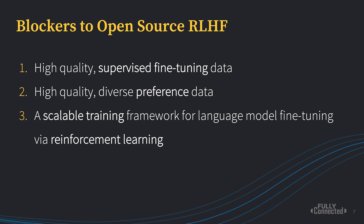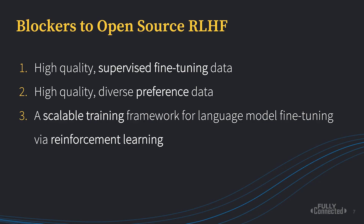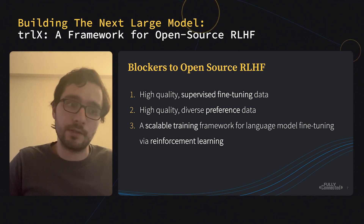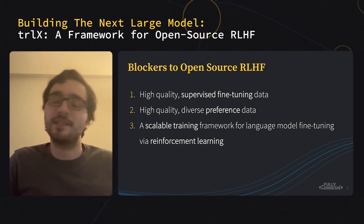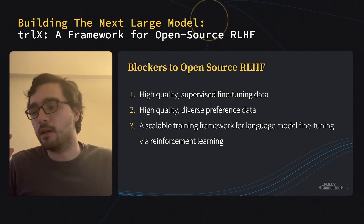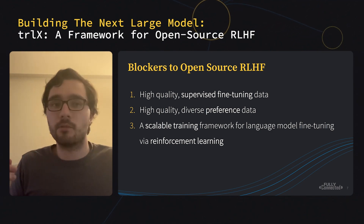Number two, once you have a supervised fine-tuned model, you still need access to high quality preference data — where you present various responses to users and have them rank or choose which responses are most preferable. This is also relatively expensive to collect and there are not that many examples out there in the wild. Number three, and perhaps most underrated, you need a scalable training framework for language model fine-tuning with real reinforcement learning. The dominant language model training paradigm has been a supervised or semi-supervised objective such as next token prediction, where you don't have to query an outside reward model.